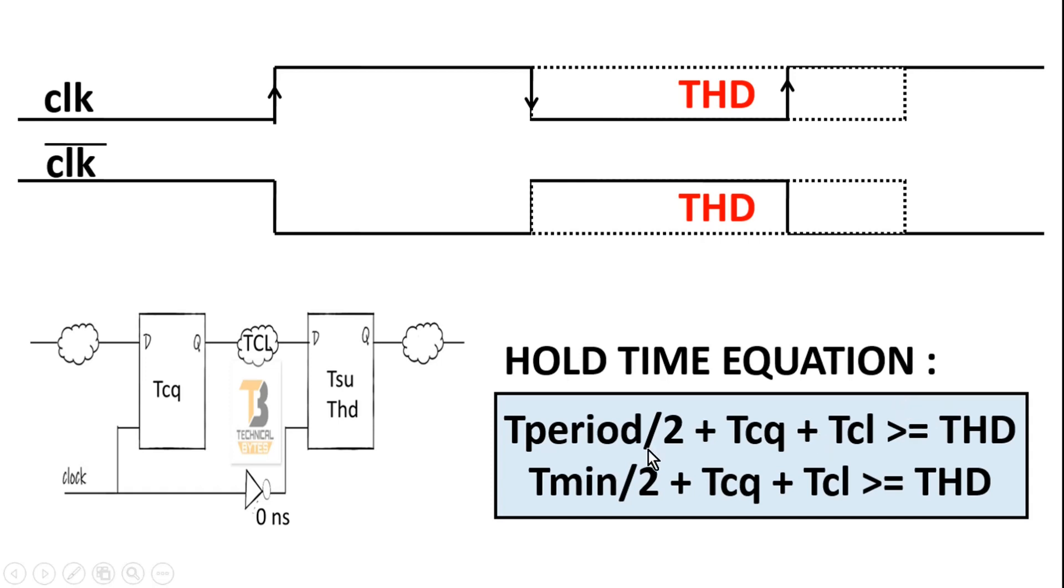In this case, our T_period/2 for which input is stable plus Tcq plus Tcl means the input is stable for that entire duration after the positive edge of the clock. If this total time is more than the hold time requirement of the second flip-flop, then we are secure. There will be no hold time violations.